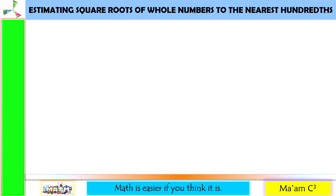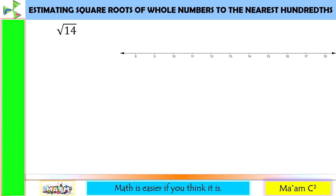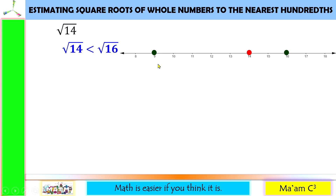This time, we are going to estimate square roots of whole numbers to the nearest hundredths. Let's have the first example: square root of 14. The first thing I'm going to do is to plot this on a number line. 14 is here. Then I'm going to think of the two closest perfect squares to 14, and those are 16 and 9. So square root of 14 is less than the square root of 16, but greater than the square root of 9, since 14 is in between 9 and 16.